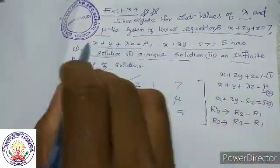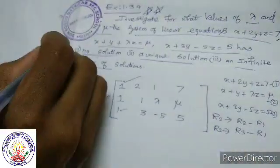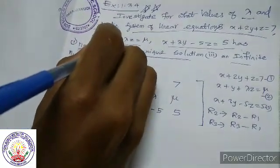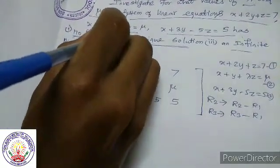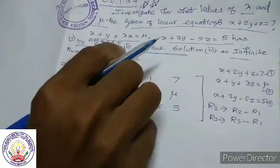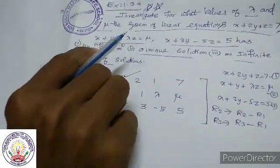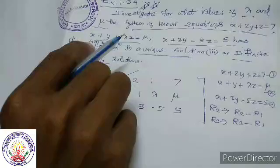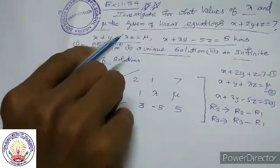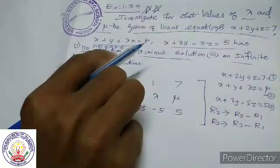The no solution condition: rank of A is not equal to rank of augmented matrix B. For example, if rank of A is 2 and rank of B is 3, there is no solution.